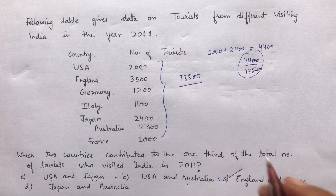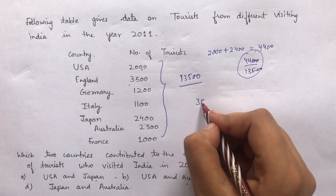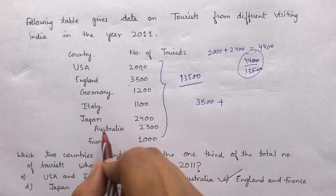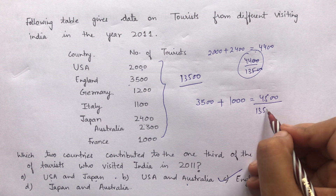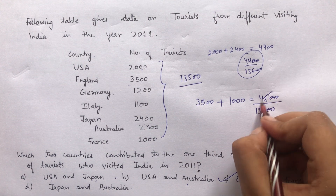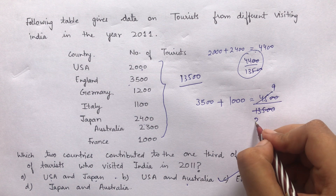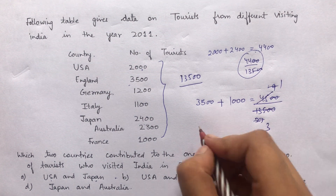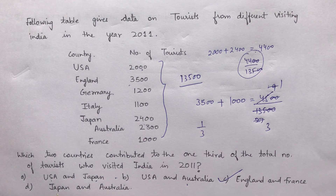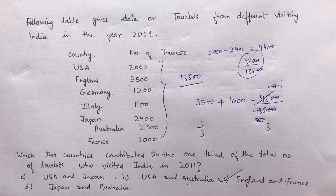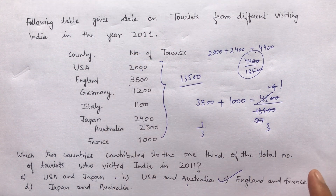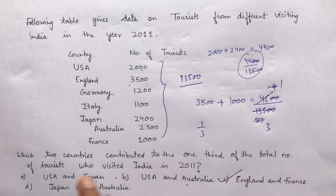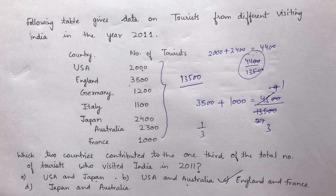The answer is C — England and France. England is 3500, plus France is 1000, so total is 4500. When you divide 4500 by 13500, you get 9/27, which equals 1/3. Japan and Australia also don't work. So England and France are the two countries that contributed to 1/3 of the total number of tourists who visited India in 2011.